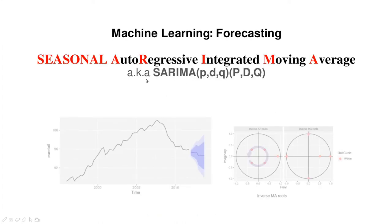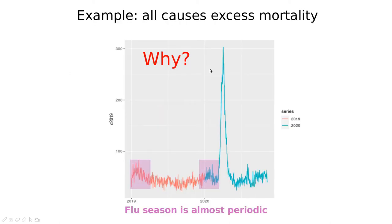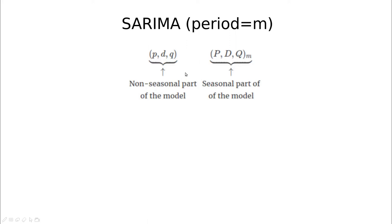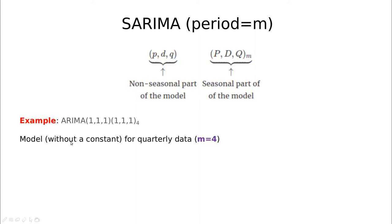Now we're going to talk about SARIMA models. We have two pairs of indices: pdq is related to ARIMA, and PDQ with capital letters is related to the seasonal part. We have this idea of a period m, which could be a week, a day, a year or whatever, and we have to include information about that periodicity.